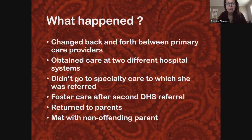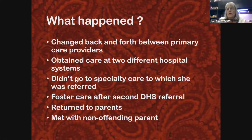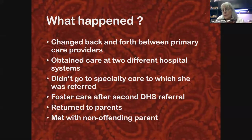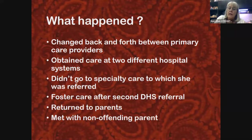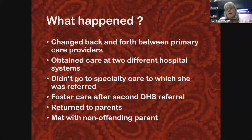First question: could you speak to why a mom would choose one child rather than another sibling? I don't really know the answer, but it could be that the targeted child had some kind of underlying illness early on that was then exaggerated. There is a pretty high rate of other children in the family also being targeted — studies show about half of siblings are also targeted.